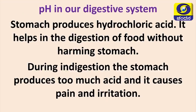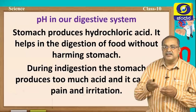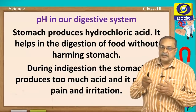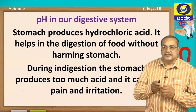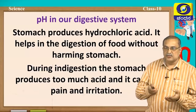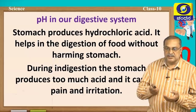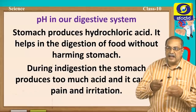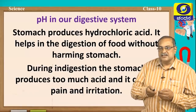Even in our digestive system, pH is very important. Our stomach produces hydrochloric acid, which helps in the digestion of food without harming the stomach. The stomach wall is lined with a mucus membrane, and special cells inside the stomach secrete mucus. This mucus prevents the action of hydrochloric acid on the tissues of the stomach, so that it will not harm and helps digest food easily.